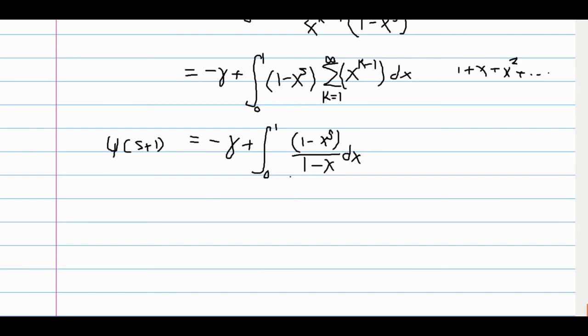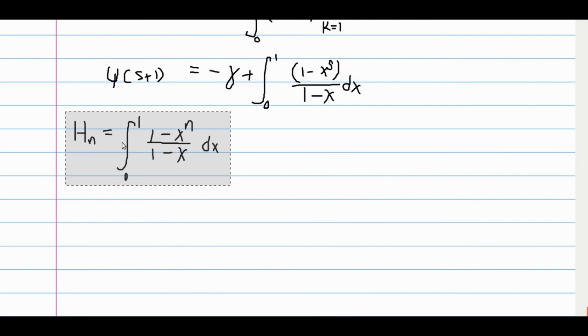If you recall from my video on the harmonic numbers, we found that h sub n was equal to this integral, which is exactly what we have right here. So, that means that digamma, evaluated at s plus 1, is minus gamma plus h sub s.